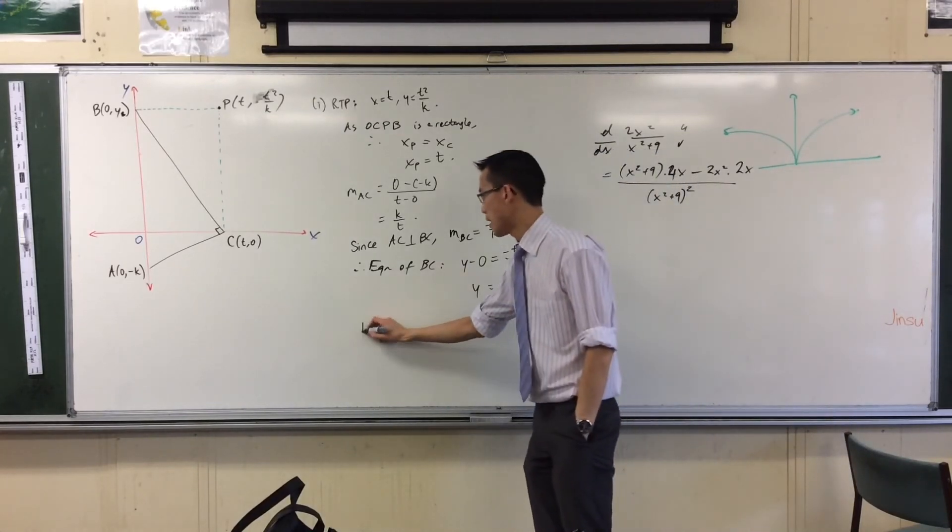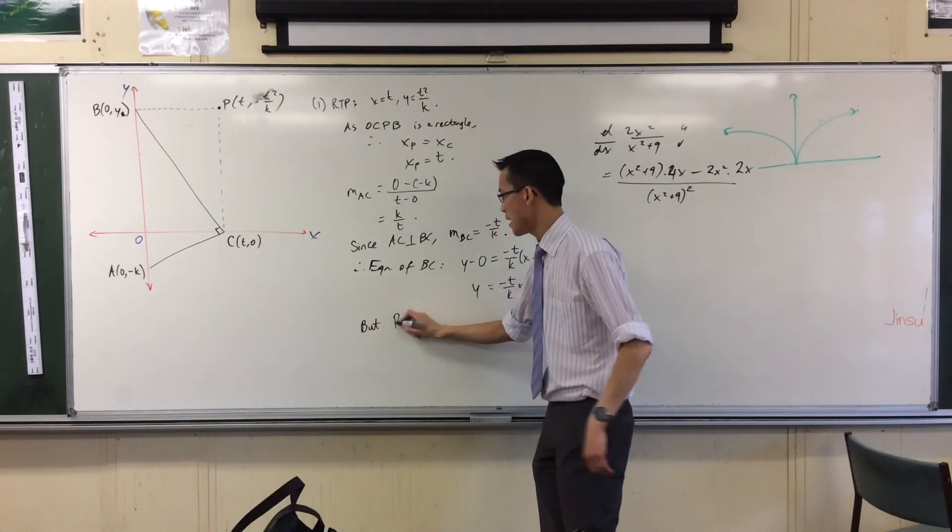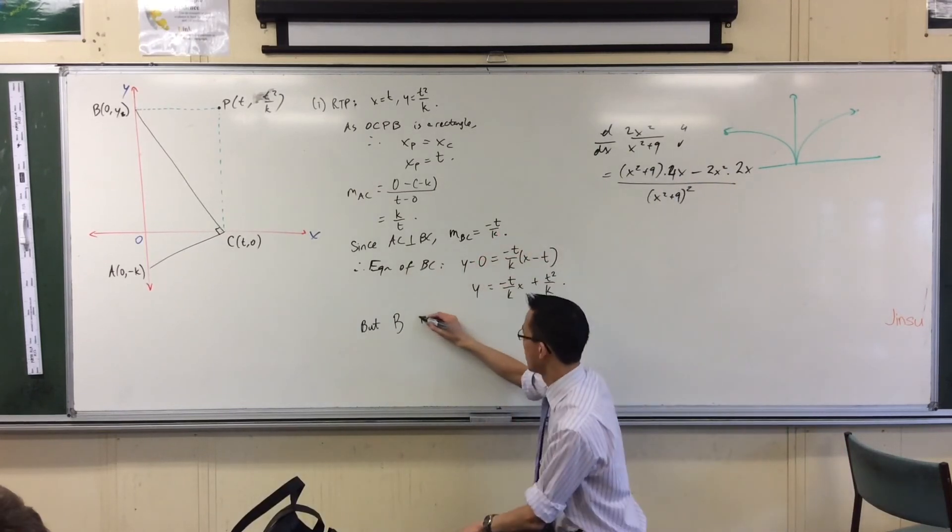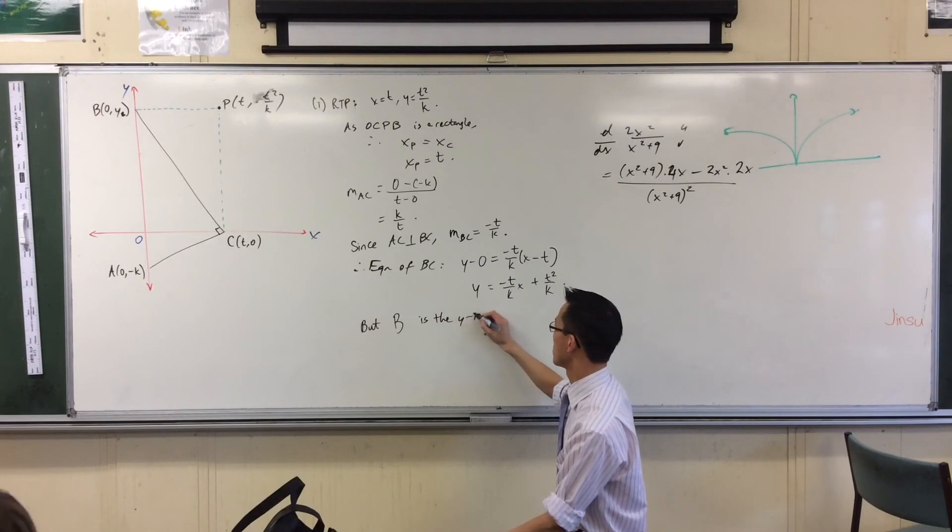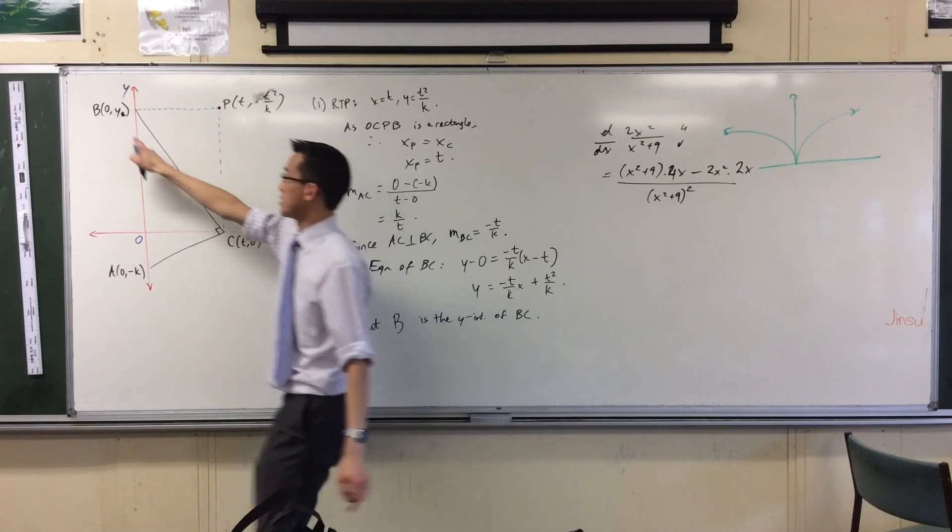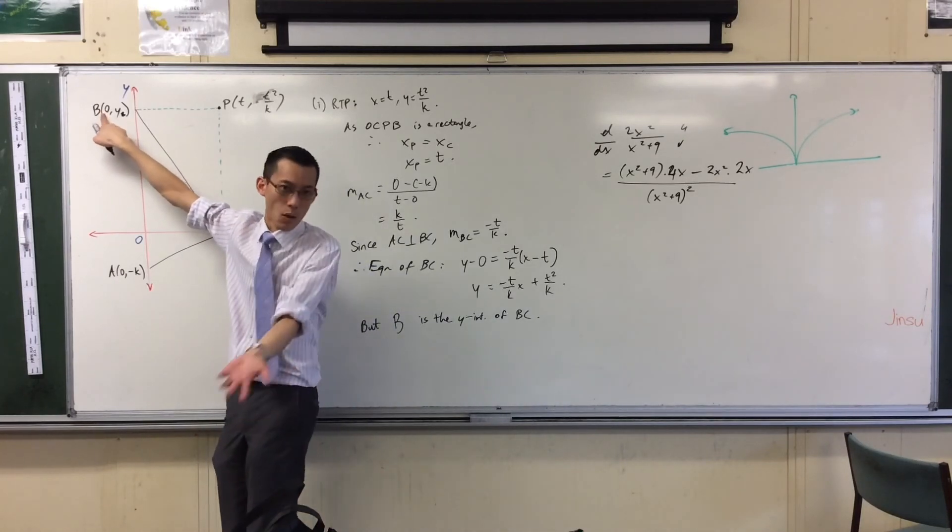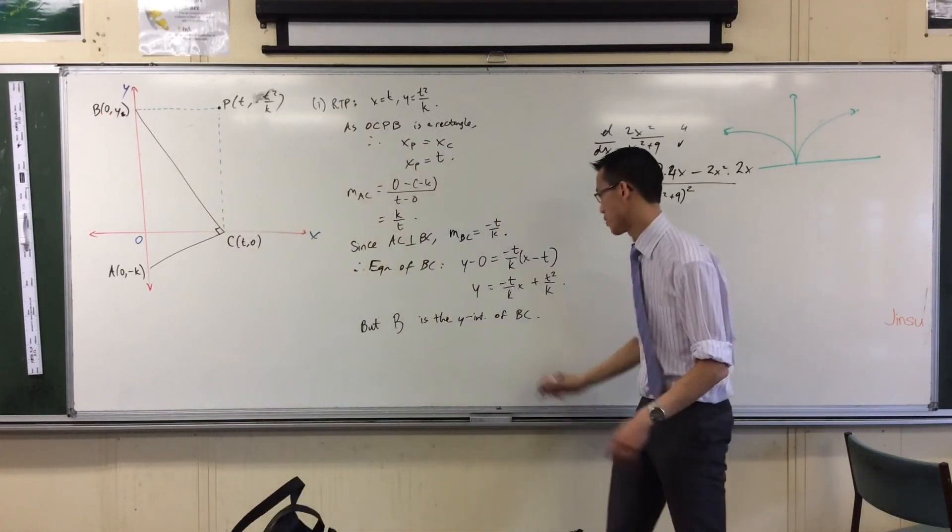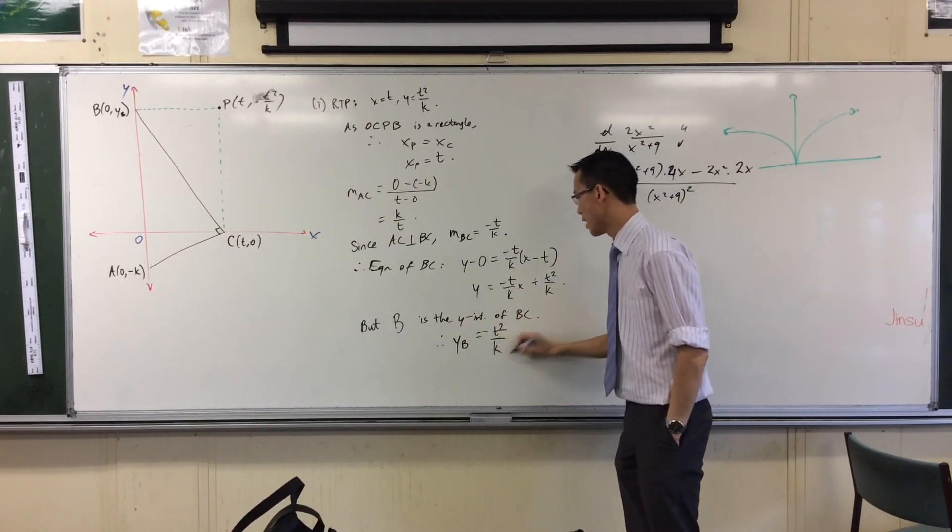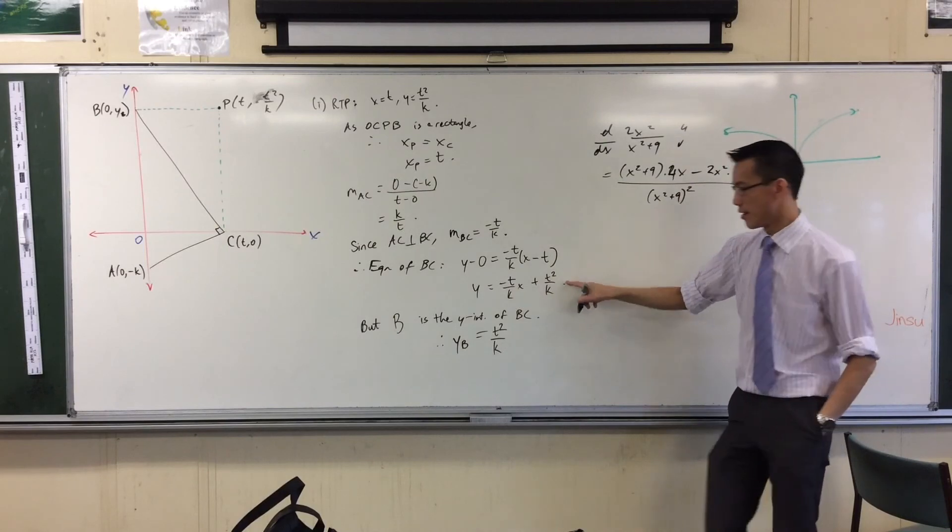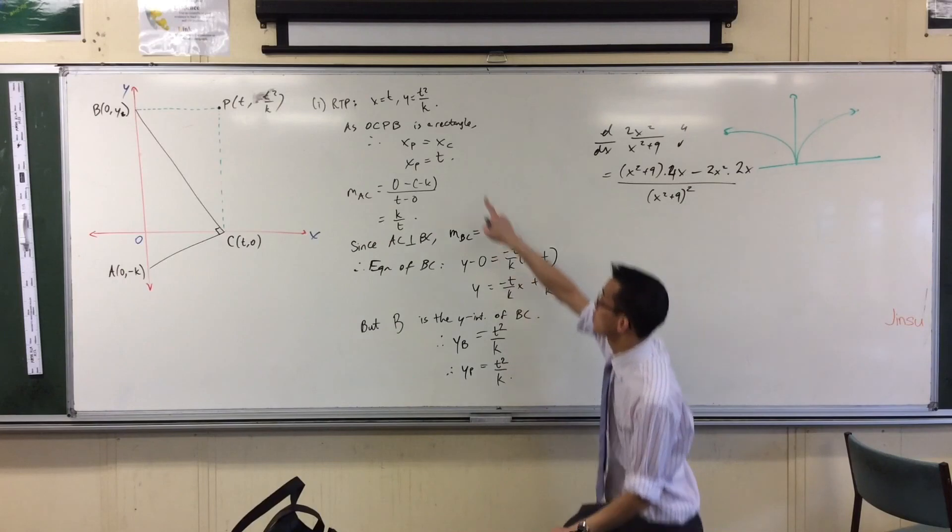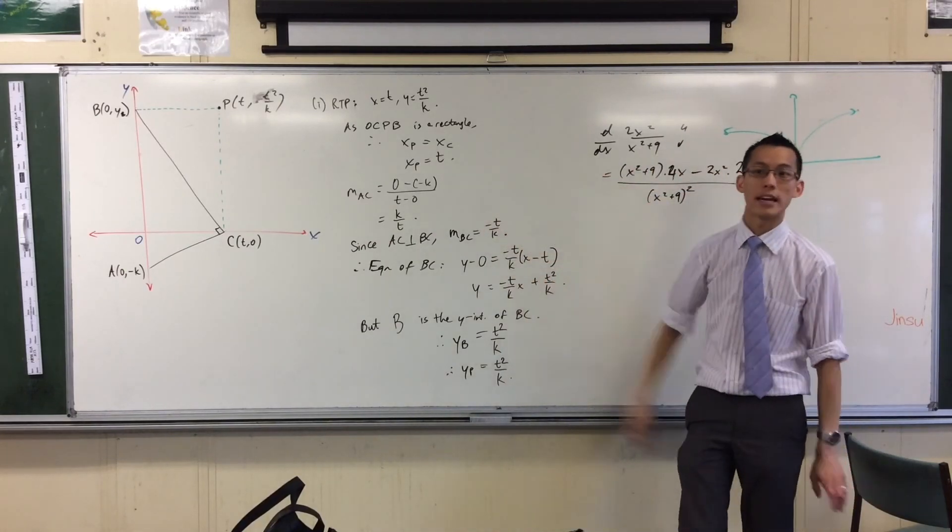But then I just have to say, B is the Y-intercept of this line, the Y-intercept of BC. I already know what its X-coordinate is because it's a Y-intercept, but now I know what its Y-coordinate is. Therefore, Y of B equals T squared on K. I simply read that from there. And so therefore, Y of P also equals T squared on K, for the same reason that I had up here, because it's a rectangle.